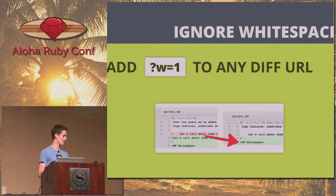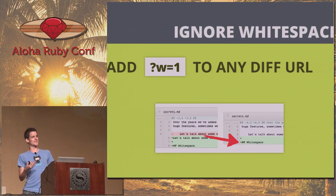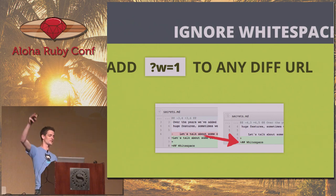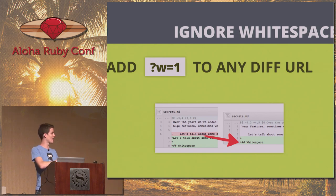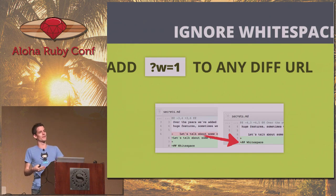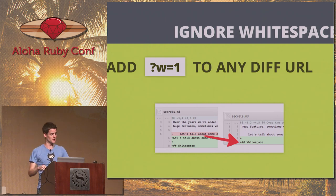Also, if you ever have those people on your team who don't control their whitespace — trailing whitespace and all that — after you fire them, you can go in and add ?w=1 to the URL. We'll truncate all of those whitespaces so we'll actually show you what actually changed, rather than showing 40 lines that are just different because of whitespace.